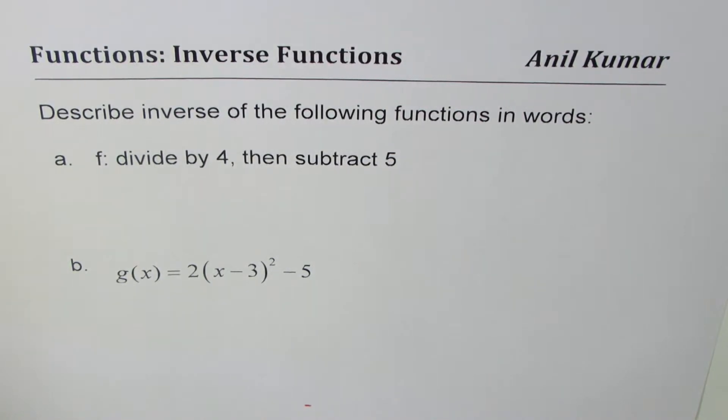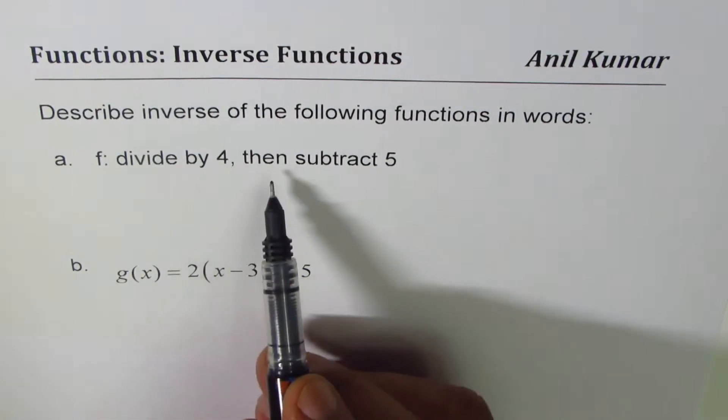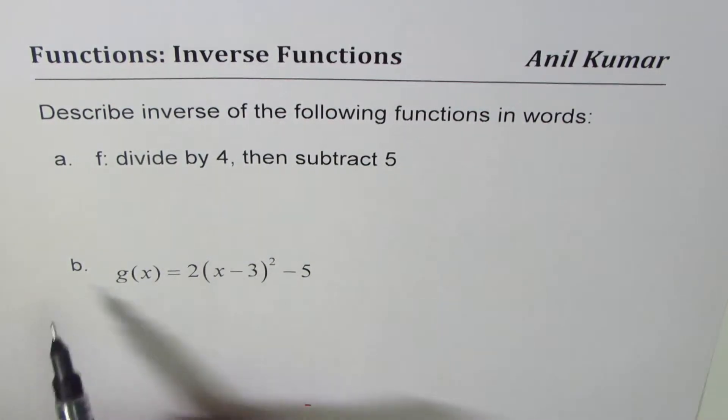So two examples. A function is defined as divide by 4, then subtract 5. The second one is g(x) equals to 2 times (x minus 3) whole square minus 5.